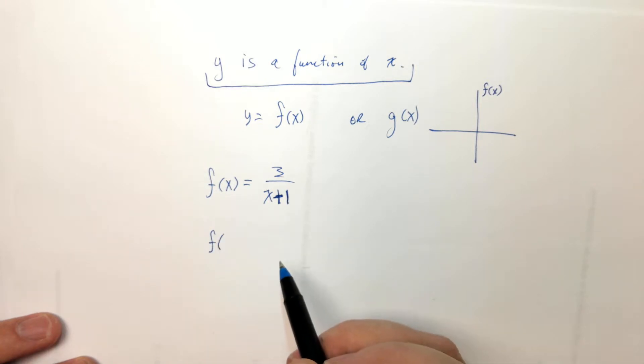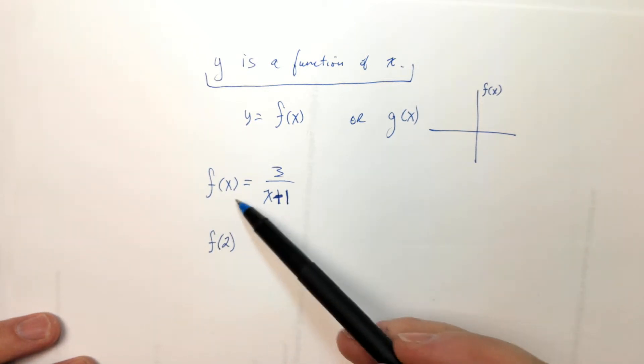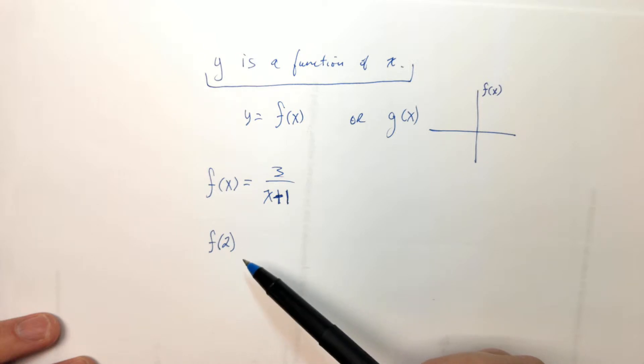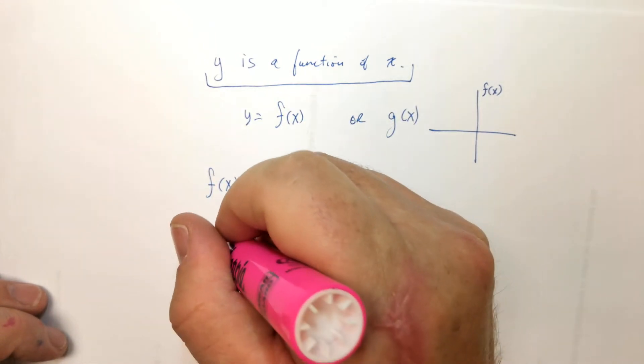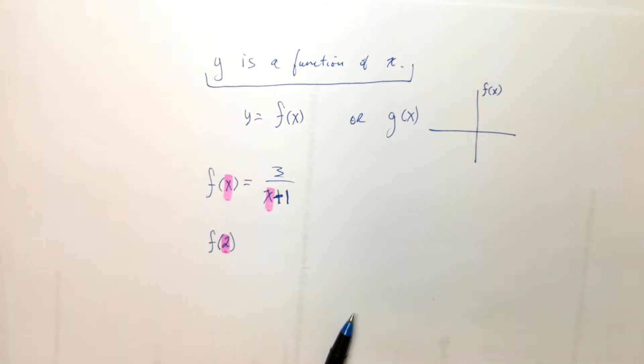So like if I had something like 2, for example. All this means is in my function f, wherever I see x, I replace it with a 2. So do you see? Like, do you see how the 2 replaced x? So that means in the function itself, wherever you see x, you just put a 2 there.